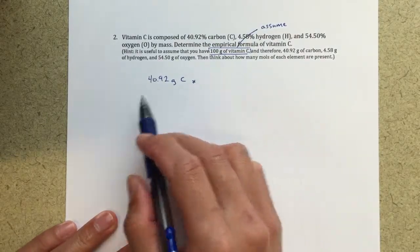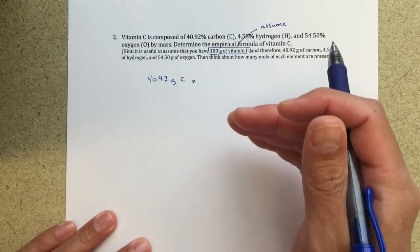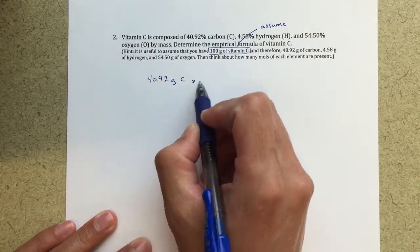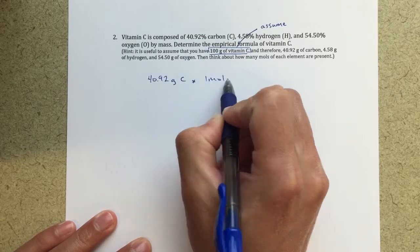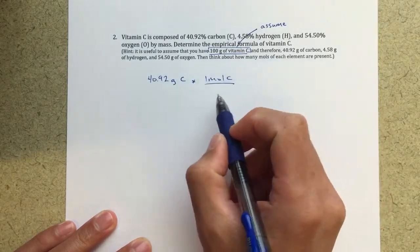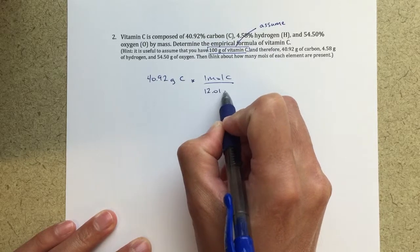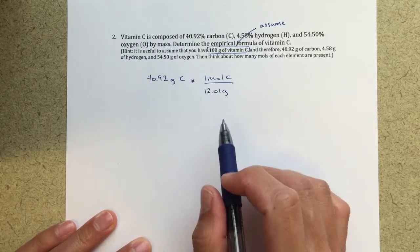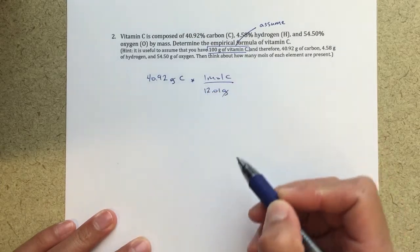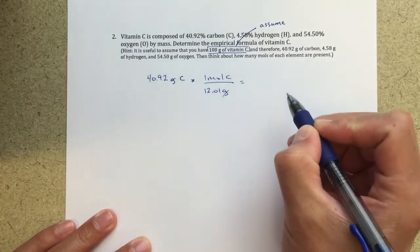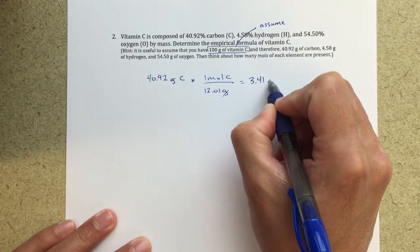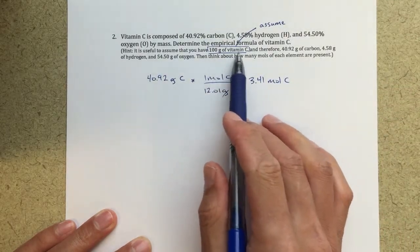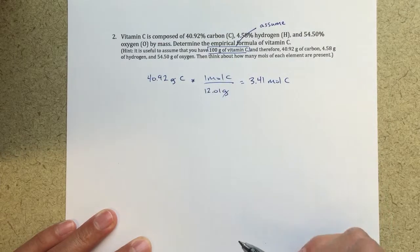First I'm going to convert these to moles, because I want to compare the number of moles of each atom. To do that comparison, I need to convert grams into moles. I'll use the molecular mass of carbon, 12.01 grams per mole from the periodic table. The units of grams cancel, leaving 3.41 moles of carbon. In my 100 grams of vitamin C, this is how many moles of carbon I have.